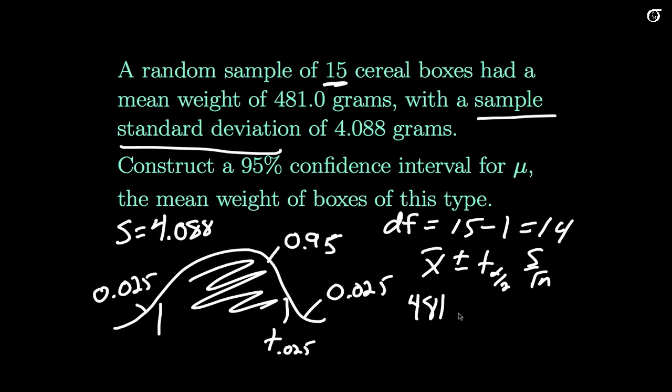Okay, so we're ready to go here. Our sample mean is 481, and we're plus and minus our 2.145 times our s over the root of n, so that's 4.088 over the square root of 15. This works out to be plus or minus 2.264. That's my margin of error, and if I do the addition and subtraction, we get approximately 478.7 to 483.3 grams.